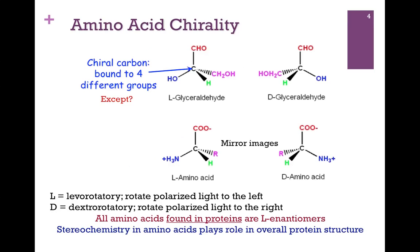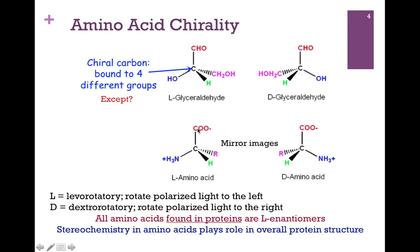Another general feature of amino acids is their chirality. A chiral carbon is one that's bound to four different functional groups. In the example at the top, we have glyceraldehyde. It has four functional groups. On the left, the OH group is on the left — that's L-glyceraldehyde. In D-glyceraldehyde, the OH is on the right. Notice that these are non-superimposable mirror images, and that gives them a feature in which they rotate polarized light. L-glyceraldehyde rotates it to the left — that's levorotatory — and D-glyceraldehyde rotates to the right — that's dextrorotatory. In a similar way, we can have L- and D-amino acids that are non-superimposable mirror images because we have four functional groups attached to that central carbon.